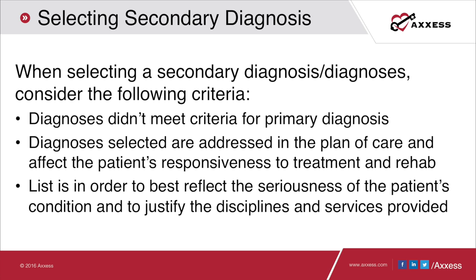For your secondary diagnoses, those are all the ones that line up in M1023. These are diagnoses that didn't meet the criteria for primary but are addressed in the plan of care and affect the patient's responsiveness to treatment and rehab. For example, if they have hypertension, diabetes, COPD, CHF, or any chronic comorbid conditions that might affect the patient's outcome, we would code those as secondary. If they have a wound and they have diabetes, that diabetes could affect wound healing, so we code it as secondary. The list is sequenced according to the acuity of the patient's needs.